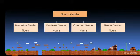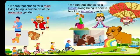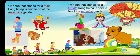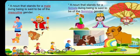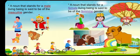Let us see the genders of nouns. There are four kinds of genders: masculine, feminine, common, and neuter. A noun that stands for a male living being is said to be masculine gender — boy, father, king, dog, lion, all these are masculine gender. A noun that stands for a female living being is said to be feminine gender — girl, mother, queen, bitch, lioness, all these are of feminine gender.